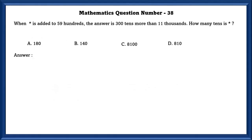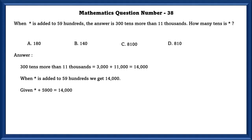Mathematics question number 38. When star is added to 59 hundredths, the answer is three hundred tens more than eleven thousands. How many tens is star? Three hundred tens more than eleven thousands is equal to three thousand plus eleven thousand, which is equal to fourteen thousand. And when star is added to 59 hundredths, we get 14,000. Given star plus 5,900 is equal to 14,000. So therefore we can find the value of star, that is 8,100. Since they have asked in tens, we will write it as tens. So star is eight hundred and ten tens.